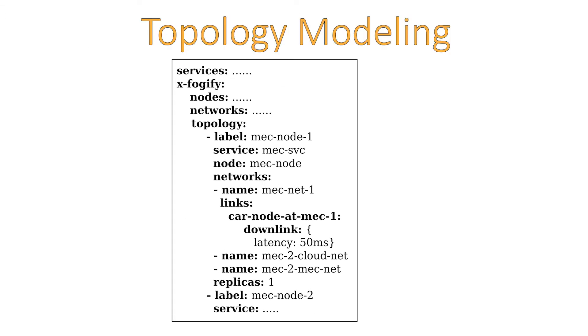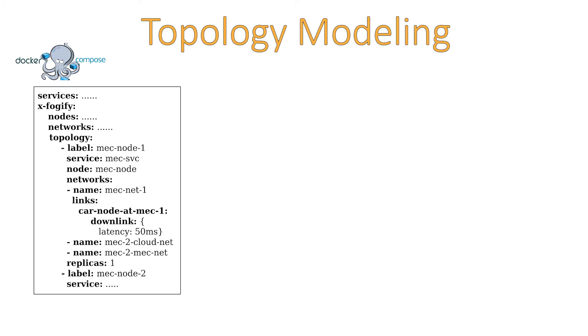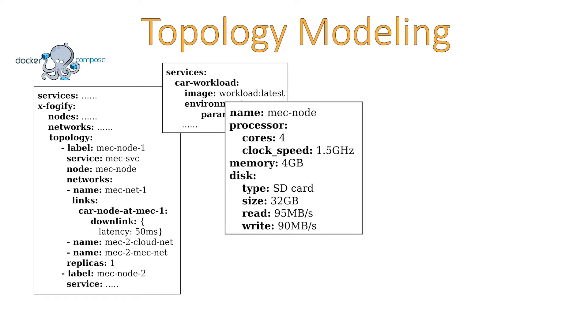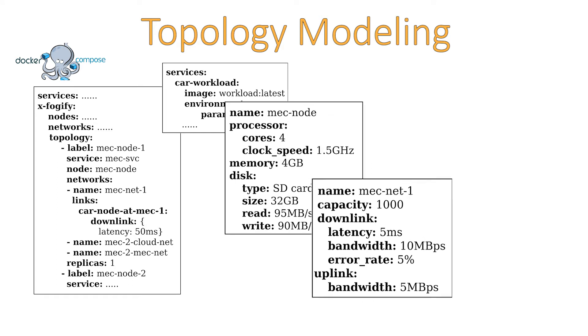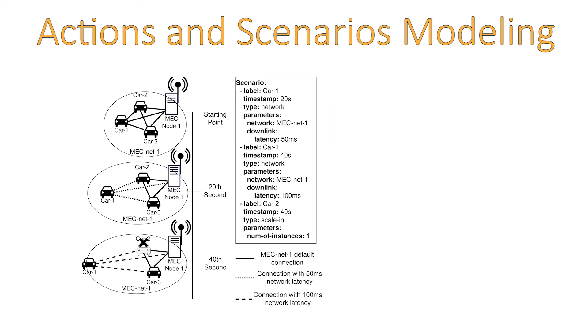The model follows a YAML representation and extends Docker Compose. In the topology description, users define fog services similarly to Docker Compose, specifying fog node capabilities including processor, memory, and networks with characteristics such as latency and bandwidth.